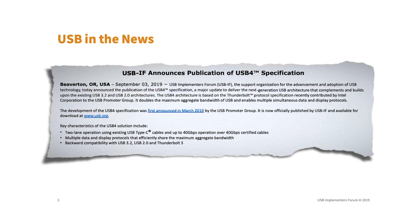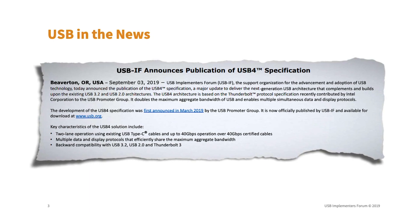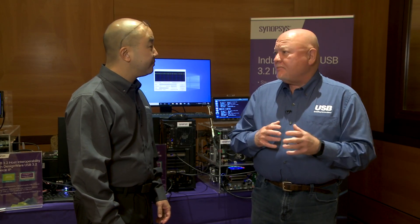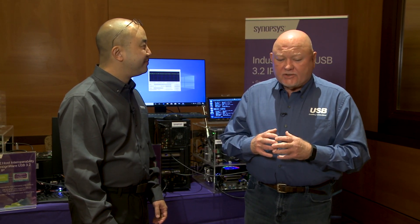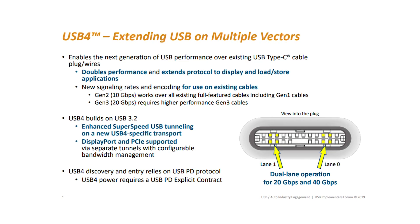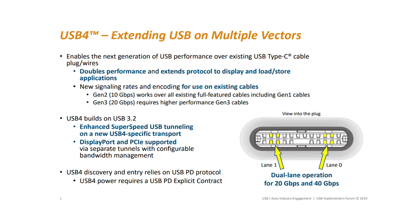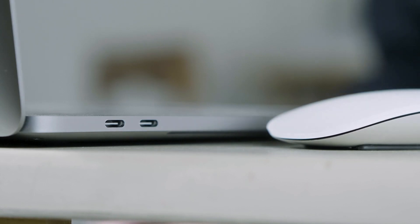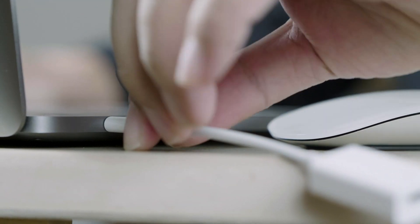USB 4 is a brand new specification. We just released it on September 3rd, and we're here having our first developers conference around USB 4. USB 4 is really the next generation technology for USB. Basically, it's a huge aggregate pipe that can carry PCI Express, DisplayPort, Thunderbolt, USB 3.2, and USB 2.0. It's backward compatible, and it carries all of those protocols over a single pipe over the USB Type-C cable and connectors that we have today.